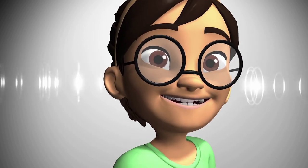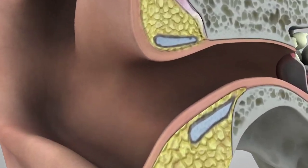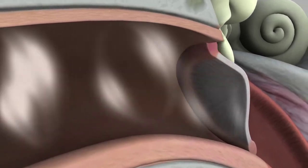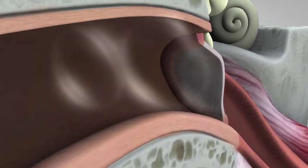The outer ear catches the waves, which then travel through a narrow passageway called the ear canal. The sound waves reach the eardrum, which is a membrane roughly half the size of a dime. They make the eardrum vibrate.